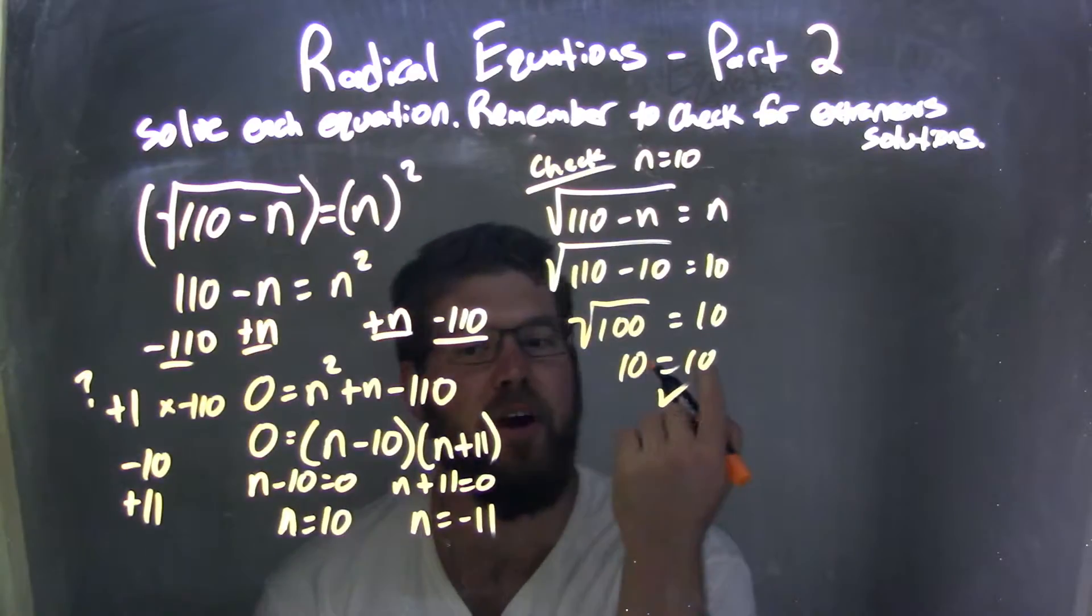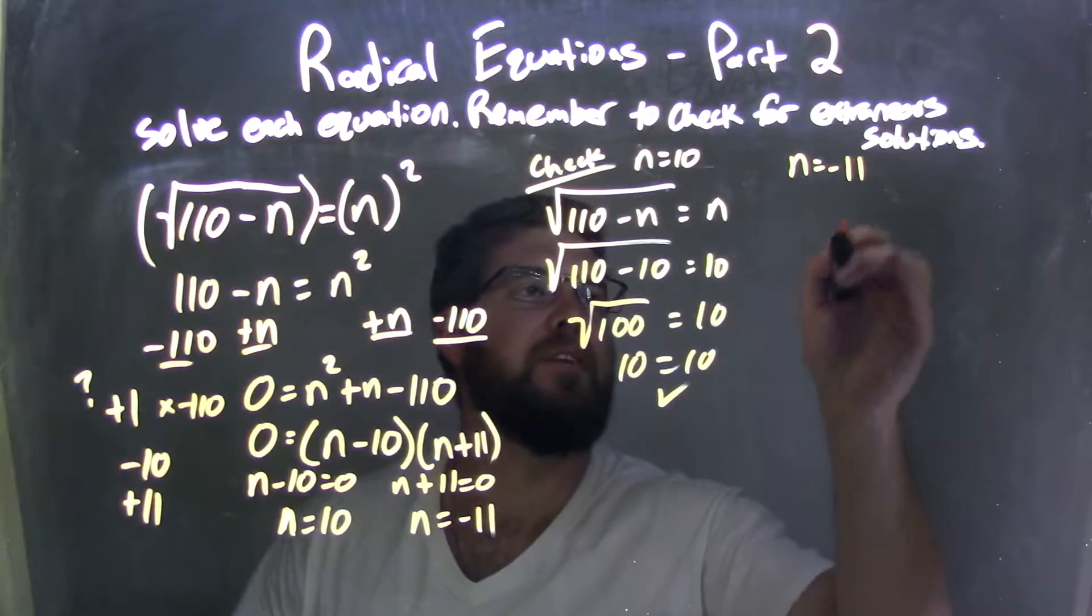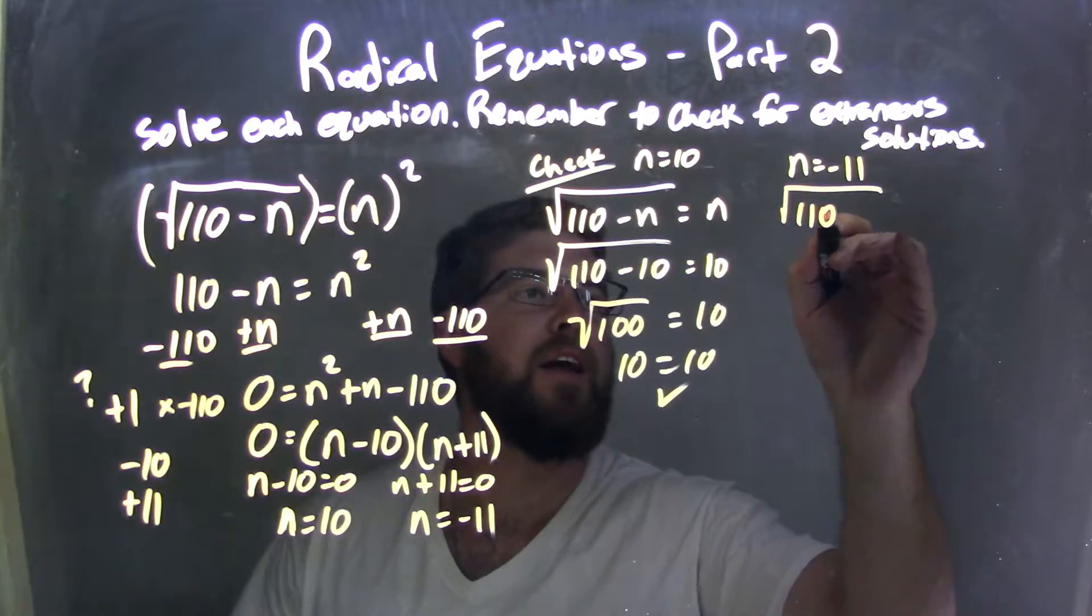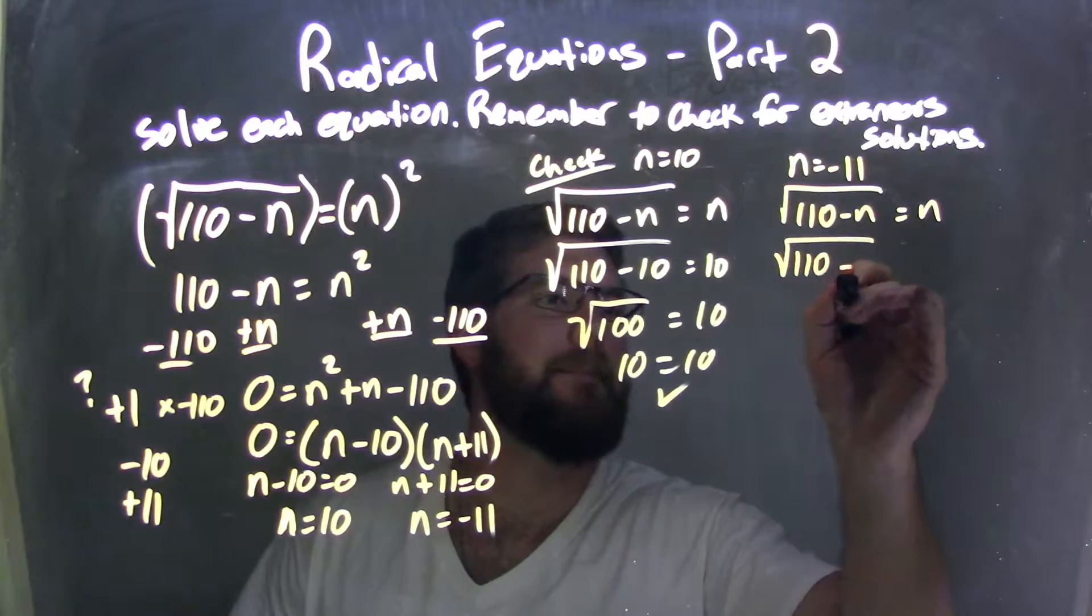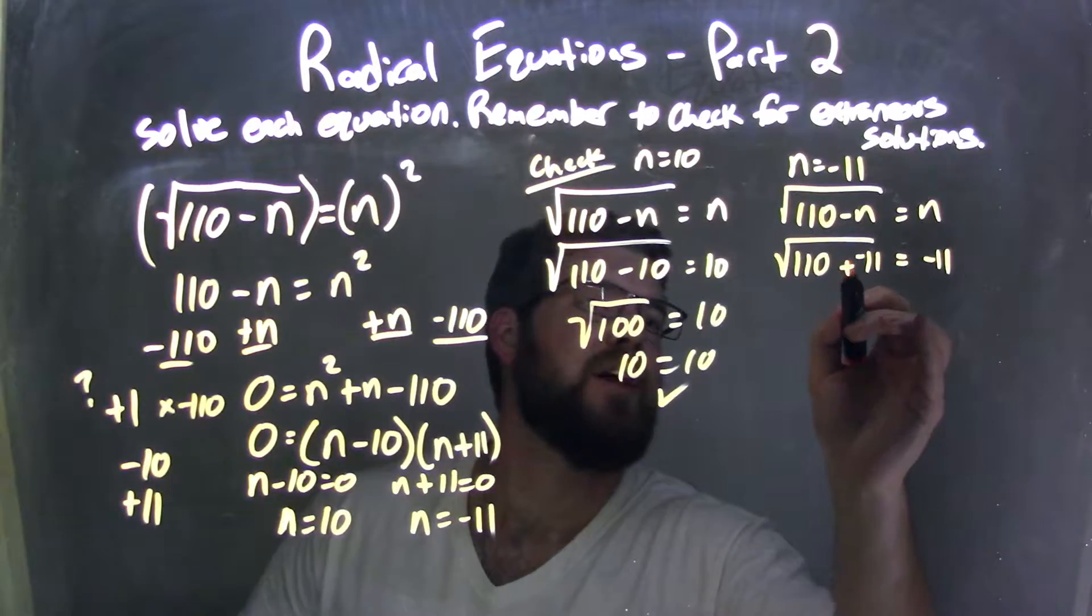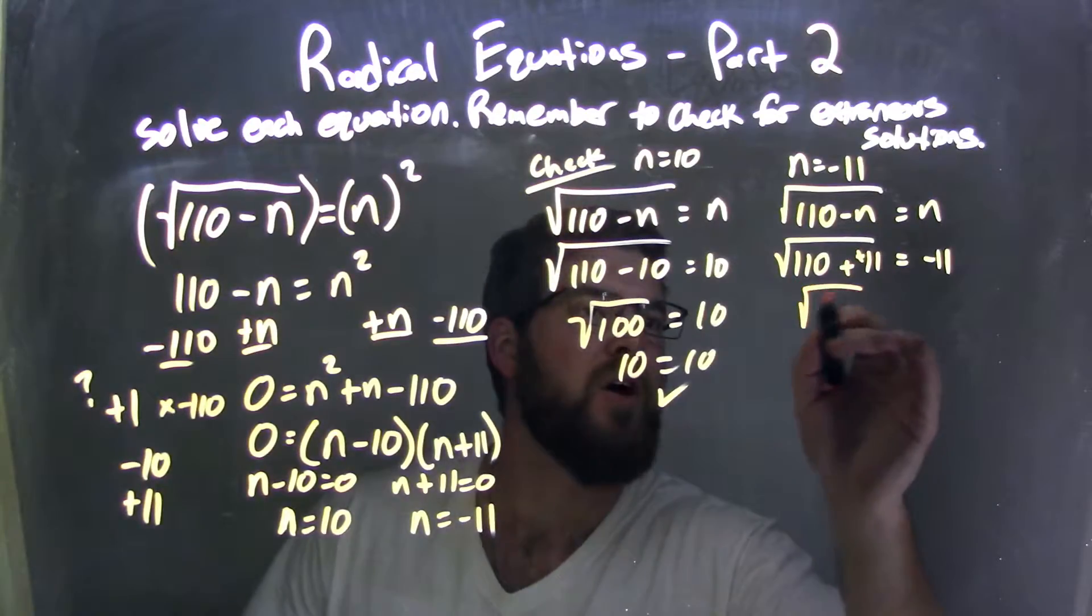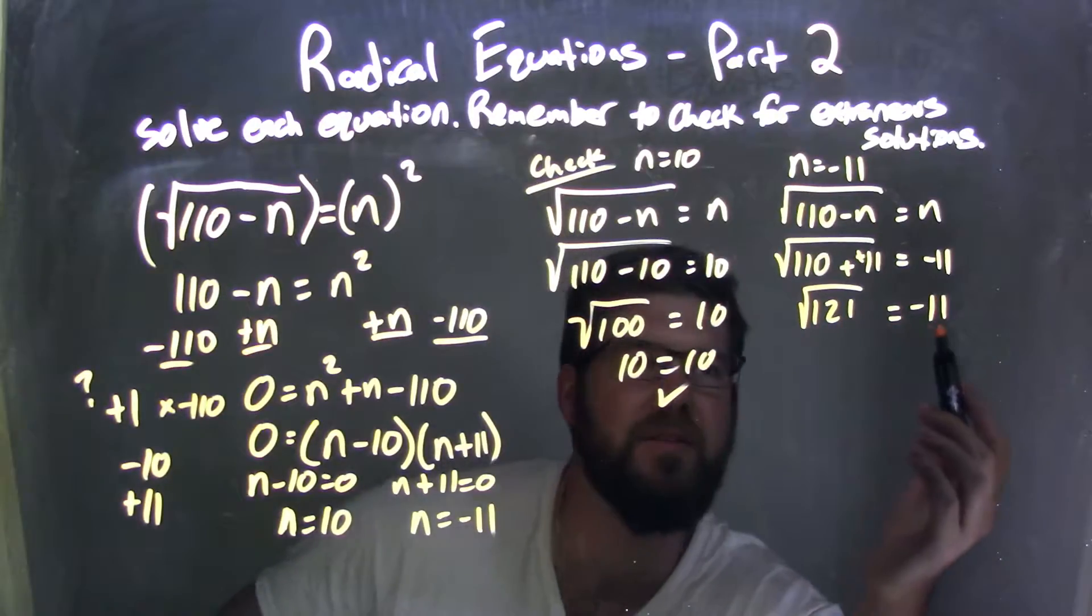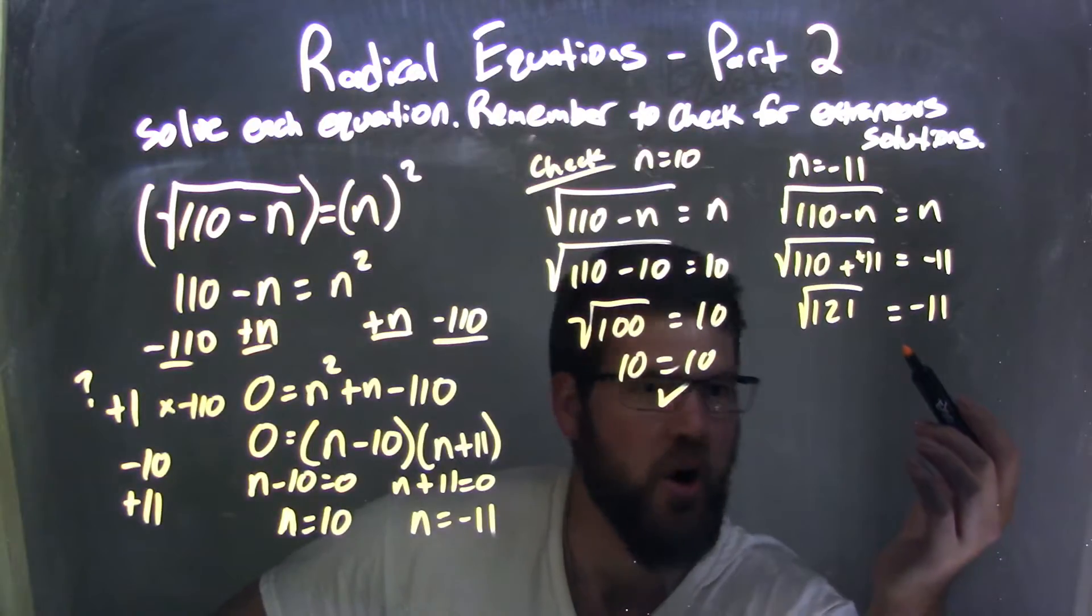Let's see if n equals negative 11 is extraneous, so we have n equals negative 11. So we rewrite our equation, 1/10 minus n equals n, I'm going to plug negative 11 in. So square root of 1/10 minus negative 11 equals negative 11. Minus a negative is plus a positive, 1/10 plus 11 is 121, and right here we can see this number's positive, this one's negative. Square root of 121 does not equal negative 11, not at all.